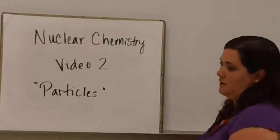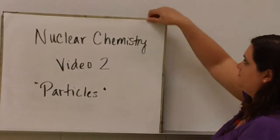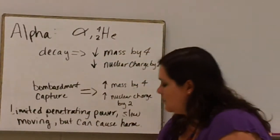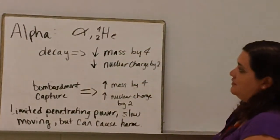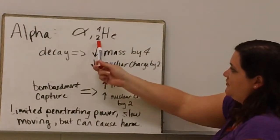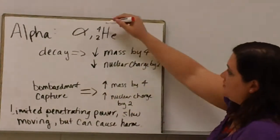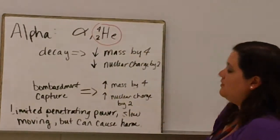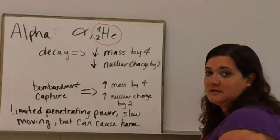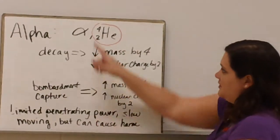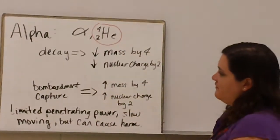Today we are going to talk about nuclear particles. First we will talk about alpha particles. We can use two different symbols for alpha particles. The one we will use most often is this one, because alpha particles have a mass of 4 and a nuclear charge of 2.